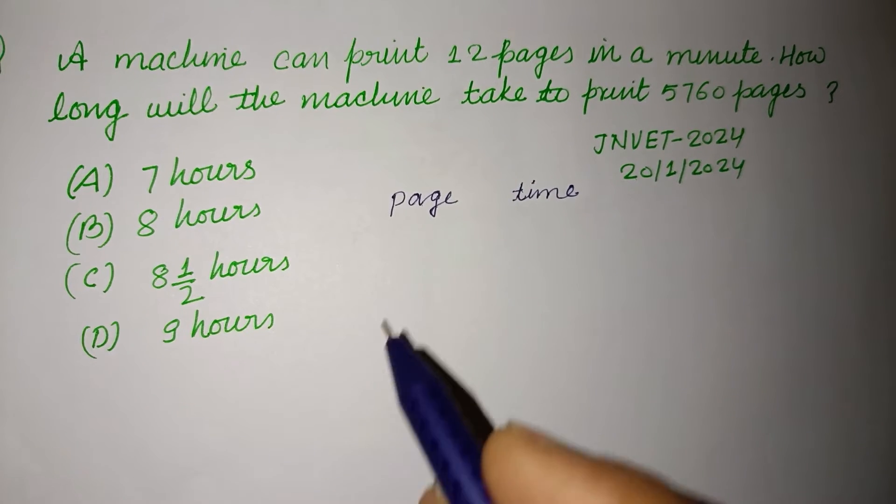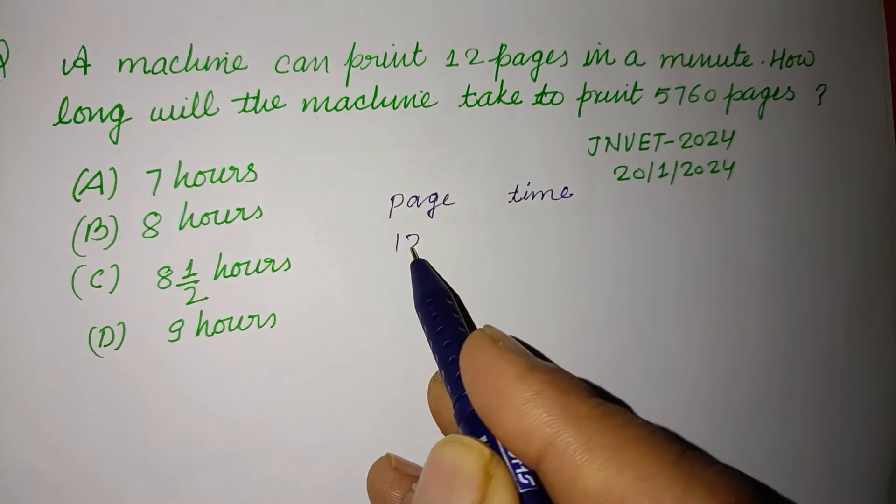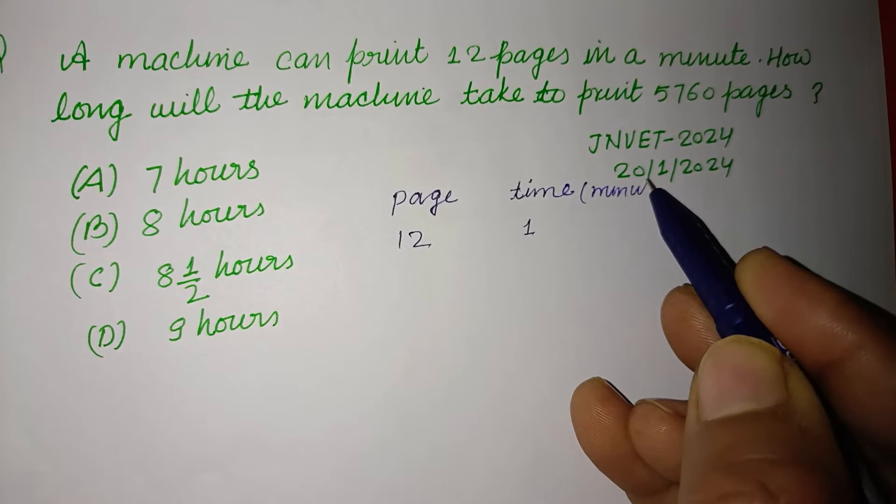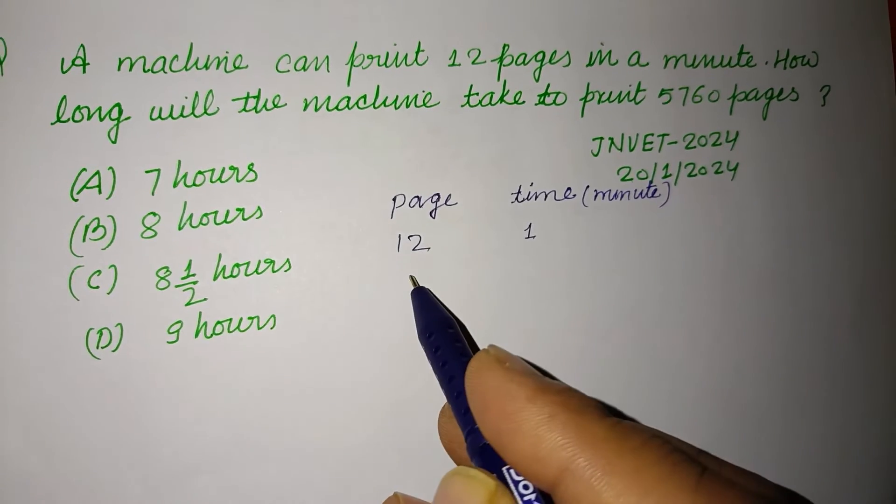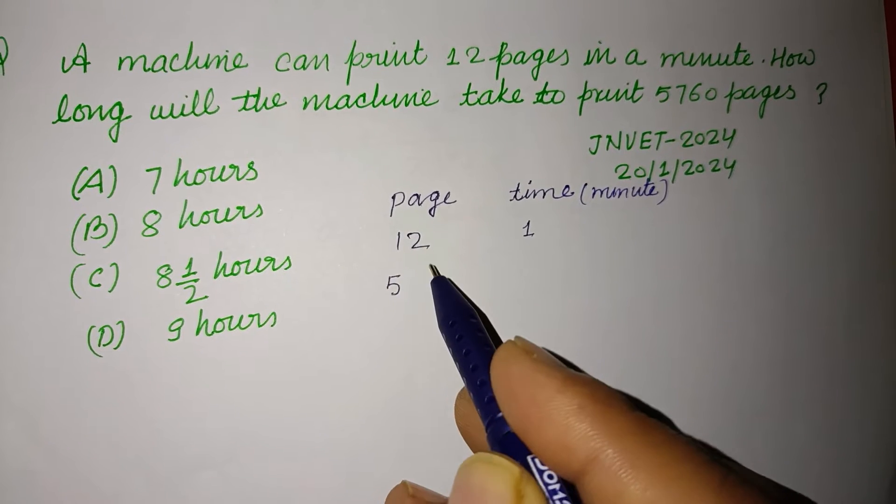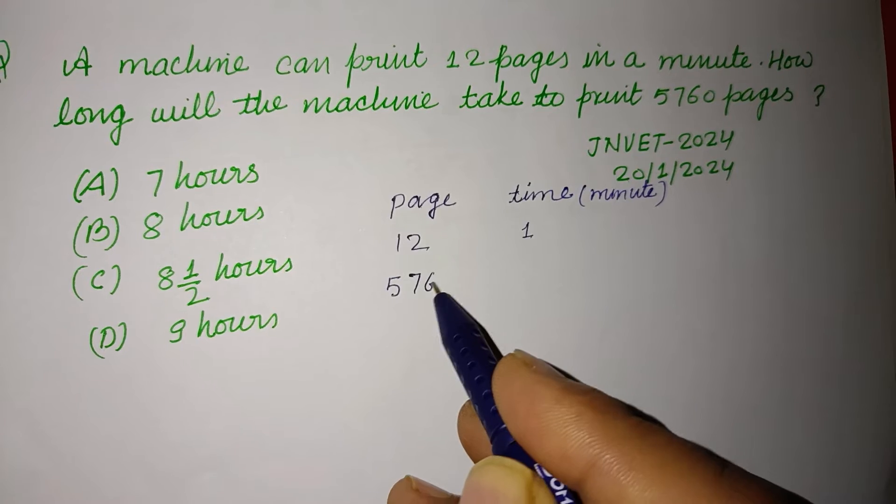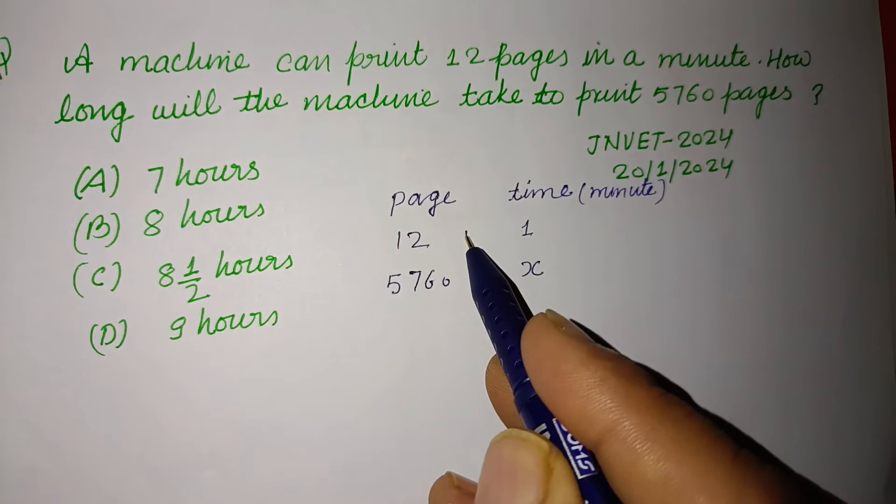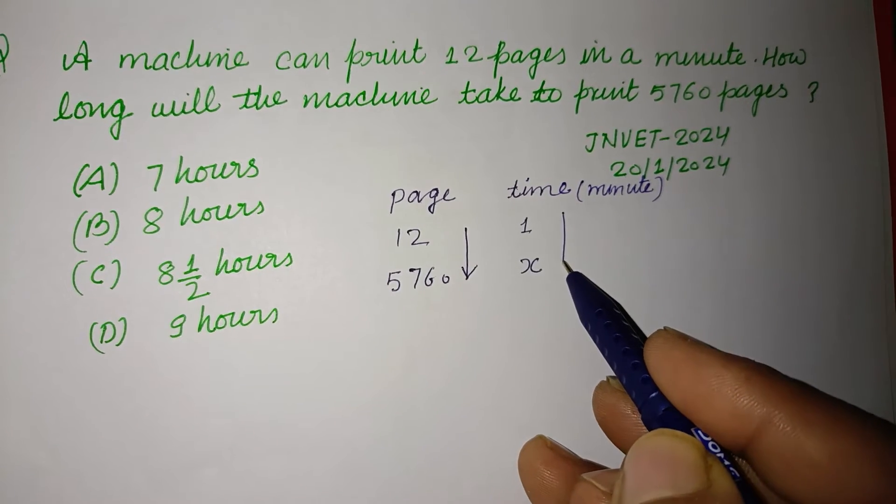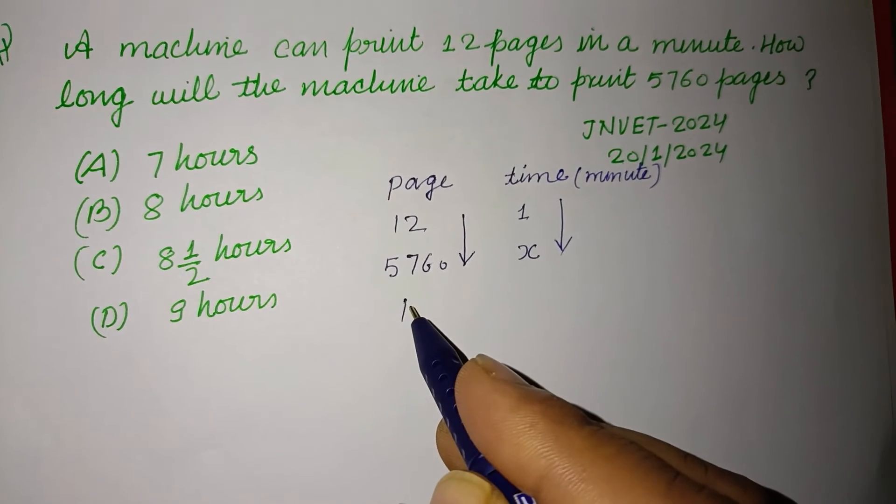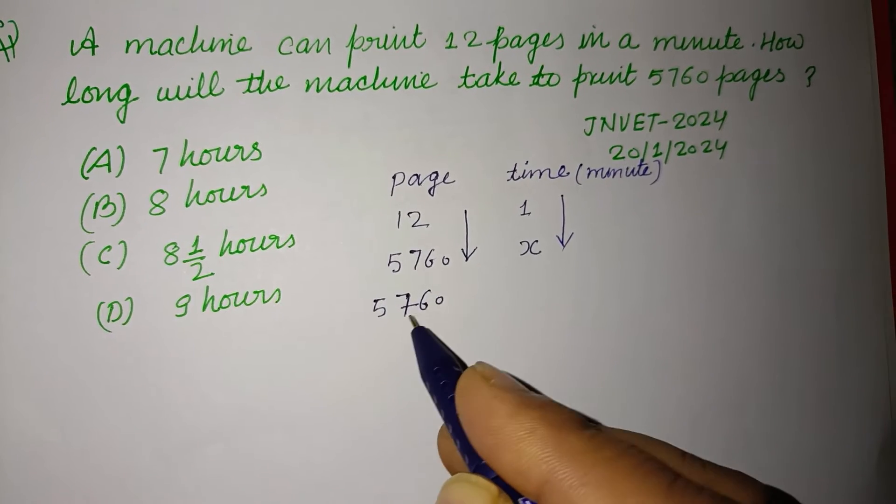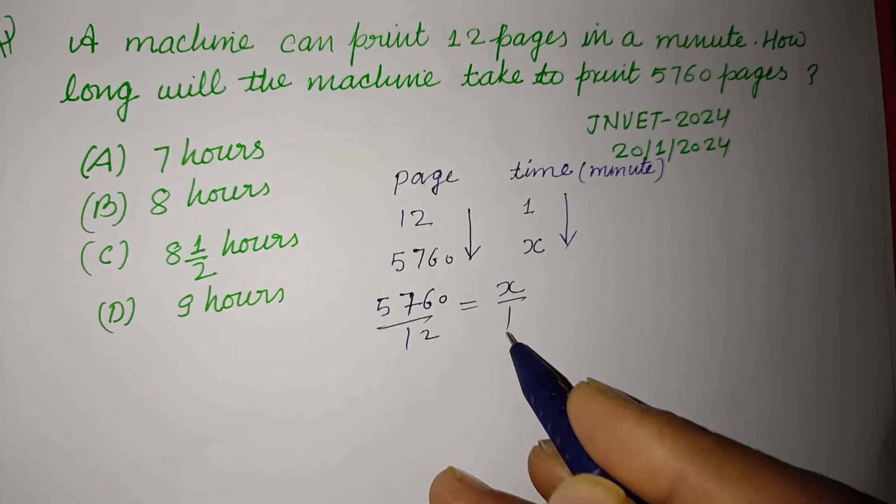By using unitary method, 12 pages is printed in 1 minute. Time is here in minute and the number of pages increases from 12 to 5760 and this is x. Since number of pages is increasing, then time is also increased. So we take 5760 upon 12 equal to x over 1.